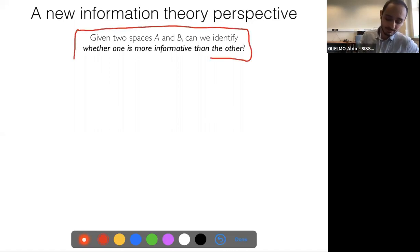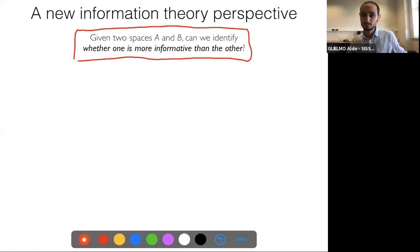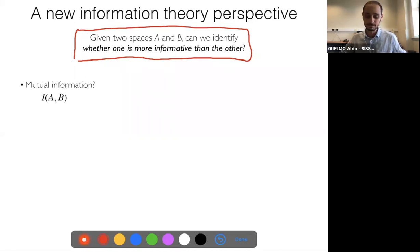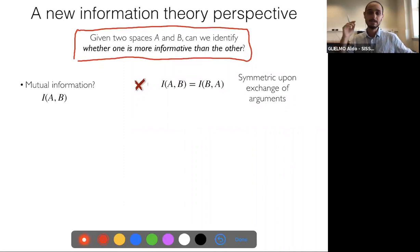The objective is to take two feature representations where you don't know which one is better, and independently of the specific architecture and the specific learning task, you want to be able to say: this feature space is much better than the other because it contains more information on that specific dataset. Given two spaces A and B, can we identify whether one space is more informative than the other?